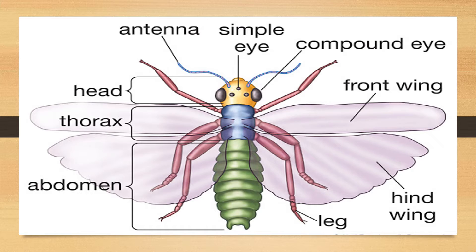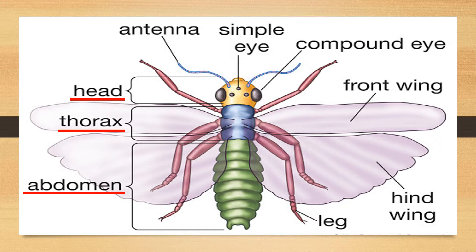Insects have three main body regions: head, thorax and abdomen. All parts of the insect are inside an exoskeleton.